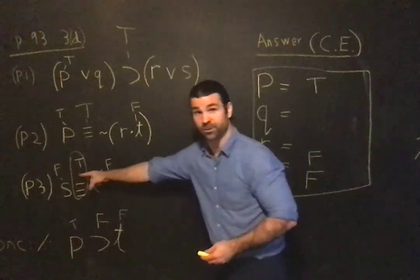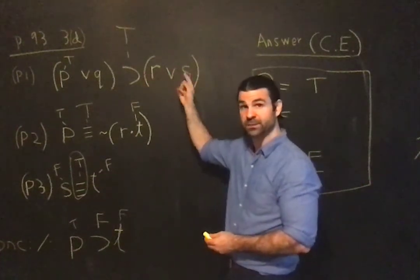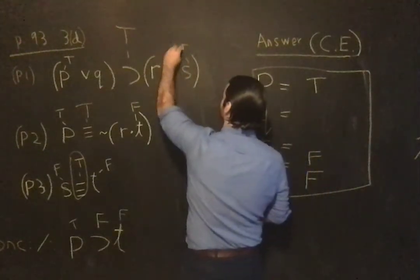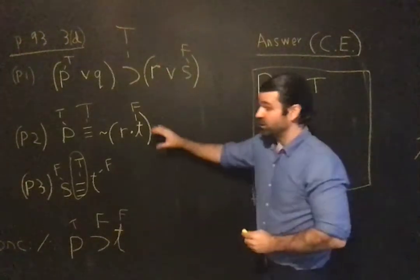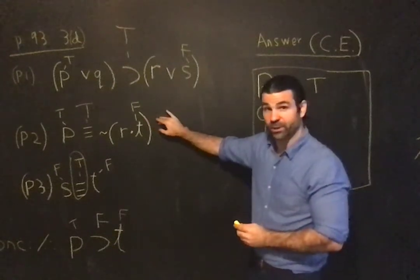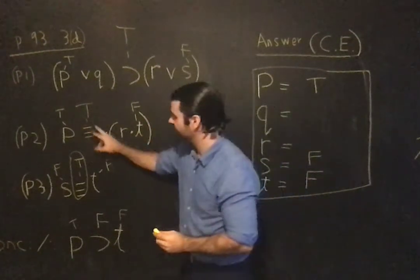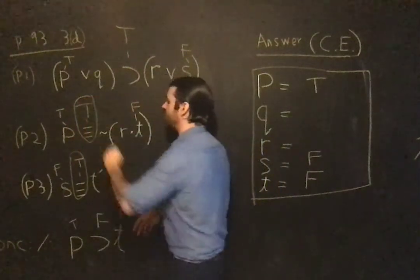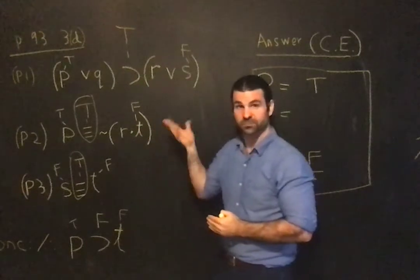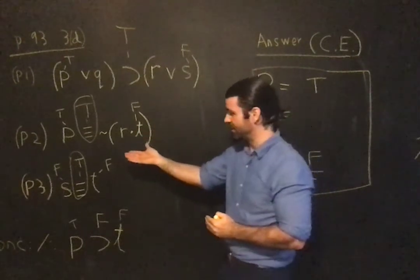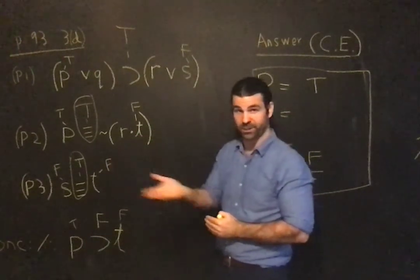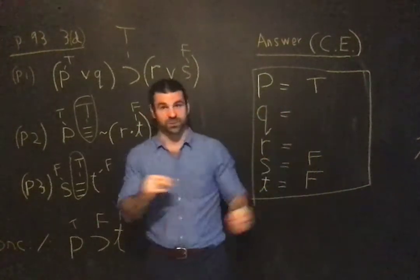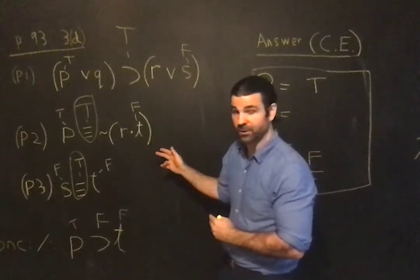Now we've just found out that S is false, so wherever S appears in the premises or conclusion, it's always false. S is false over here. Let's take a look at premise 2 and see what I can determine about it. We started with the assignment — if we're going to find a counterexample, all the premises have to be true. A counterexample is an assignment of truth values that makes the premises true and the conclusion false.